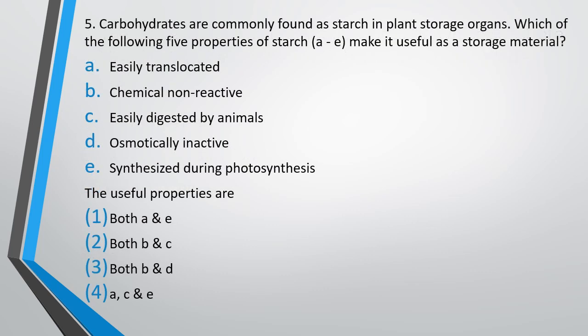Question number 5. Carbohydrates are commonly found as starch in plant storage organs. Which of the following five properties of starch makes it useful as a storage material? The properties are: easily translocated, chemically non-reactive, easily digested by animals, osmotically inactive, synthesized during photosynthesis. Which of these five properties is useful that makes starch as the storage form of carbohydrates? Both A and E, both B and C, option 3 is both B and D, option 4 is A, C and E. The correct answer is option 3, both B and D. Starch is chemically non-reactive and osmotically inactive which makes it apt for storage.